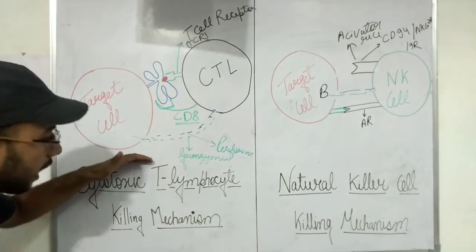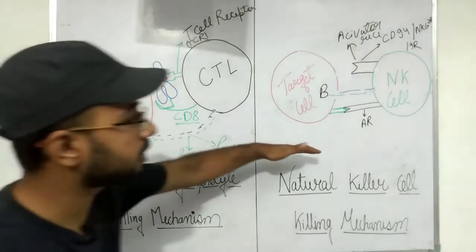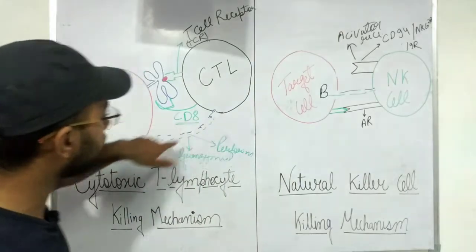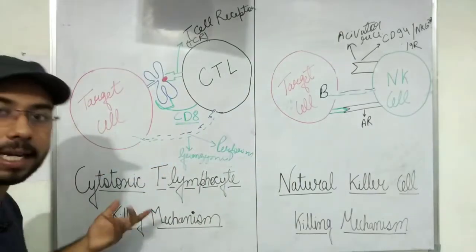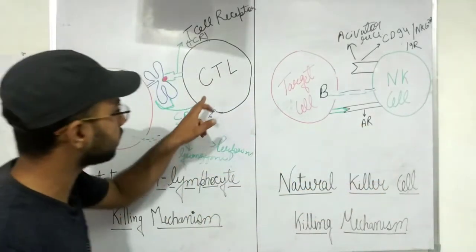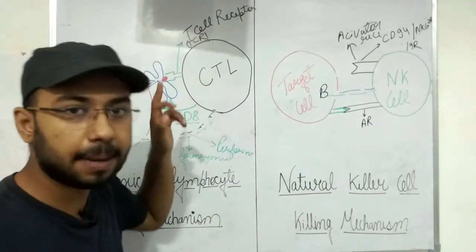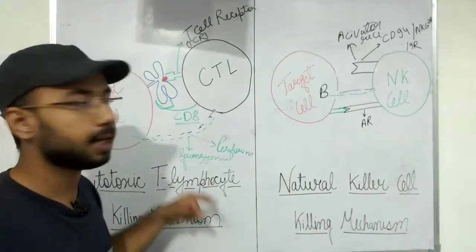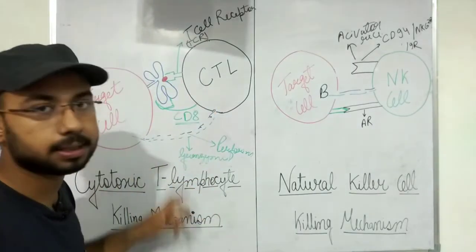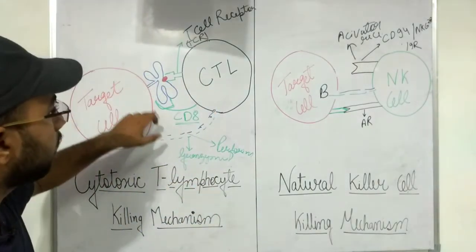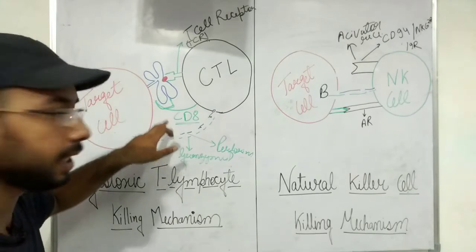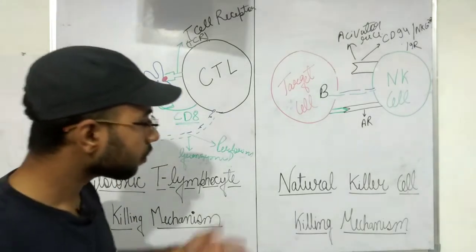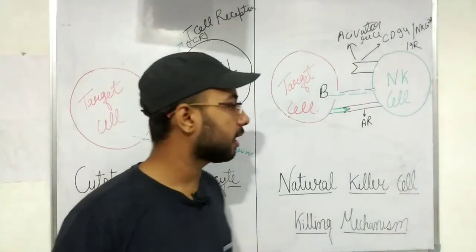To summarize the comparison: the NK cell works on an identification mechanism and is always activated, while the CTL is initially inactive and requires activation by binding MHC presenting antigen. Both ultimately use the same killing mechanism once triggered.